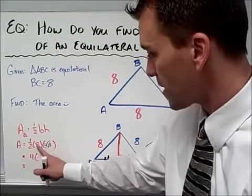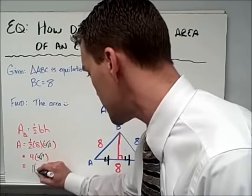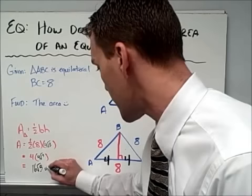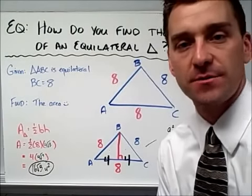So that means when I multiply this, I get one-half times 8, this gives me 4. The height is 4 root 3, that gives me 16 root 3 units squared. And there's your answer for the area of this particular triangle.